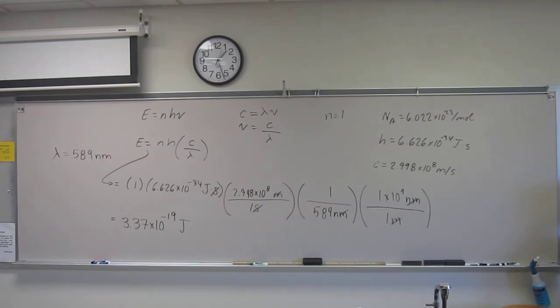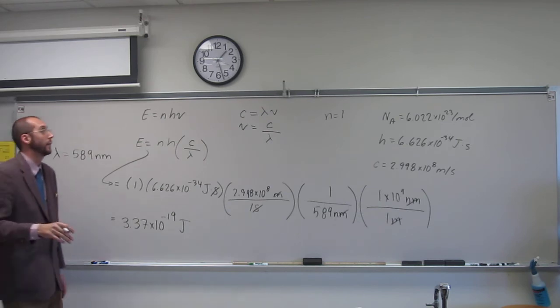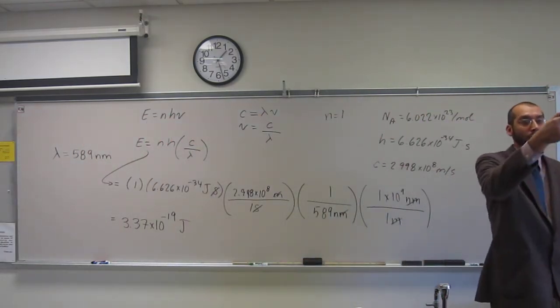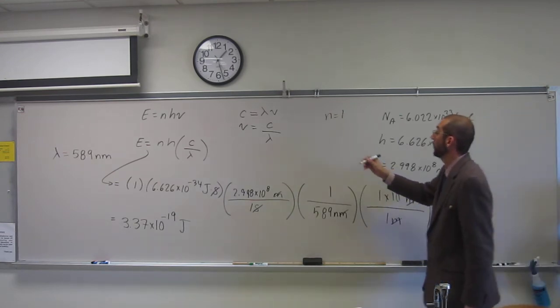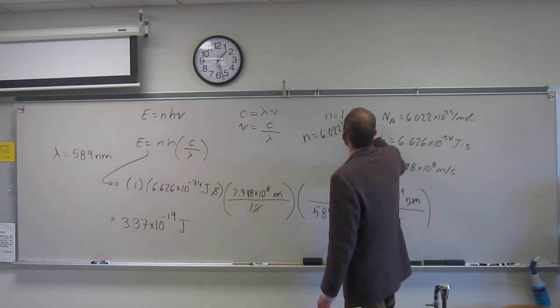So let's do this for right now and then we'll figure out what it would be for a mole of photons. So now that everybody's written this down, the only difference would be what? Can anybody tell me? Yeah. So n would change from 1 to 6.022 times 10 to the 23rd.